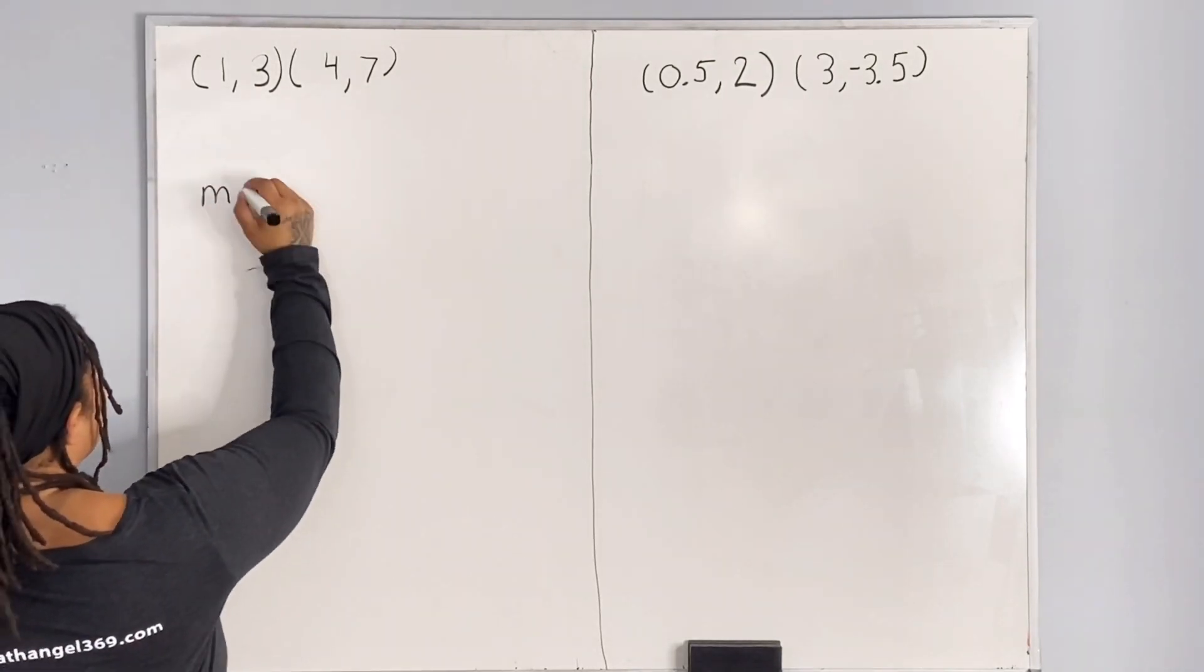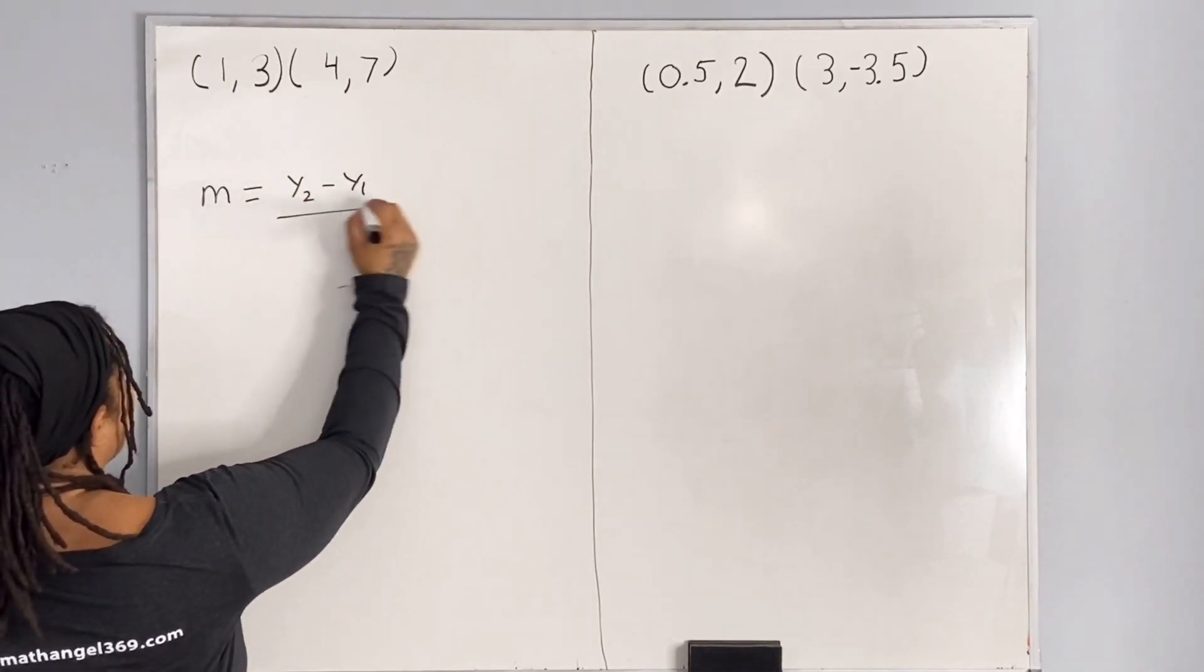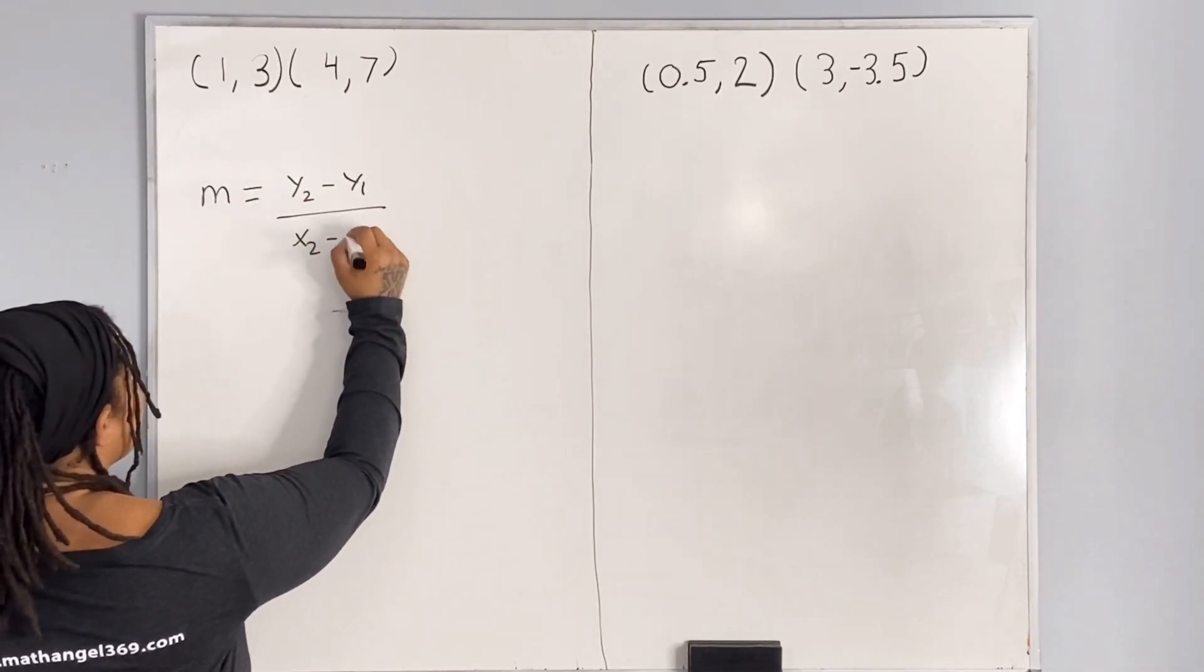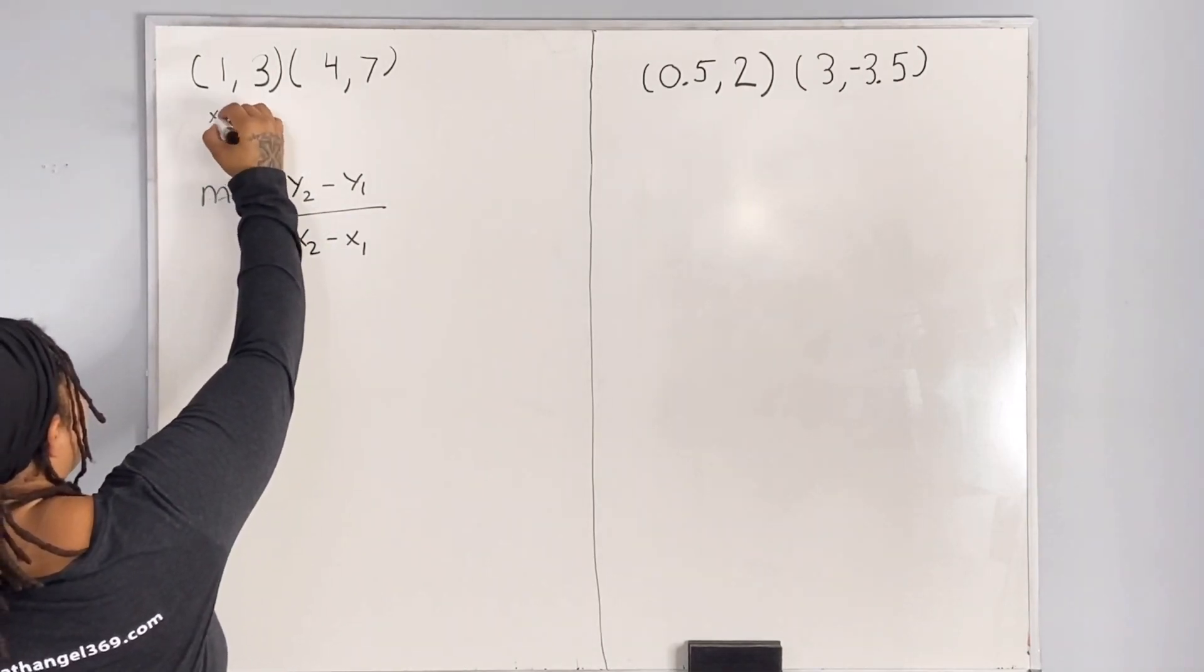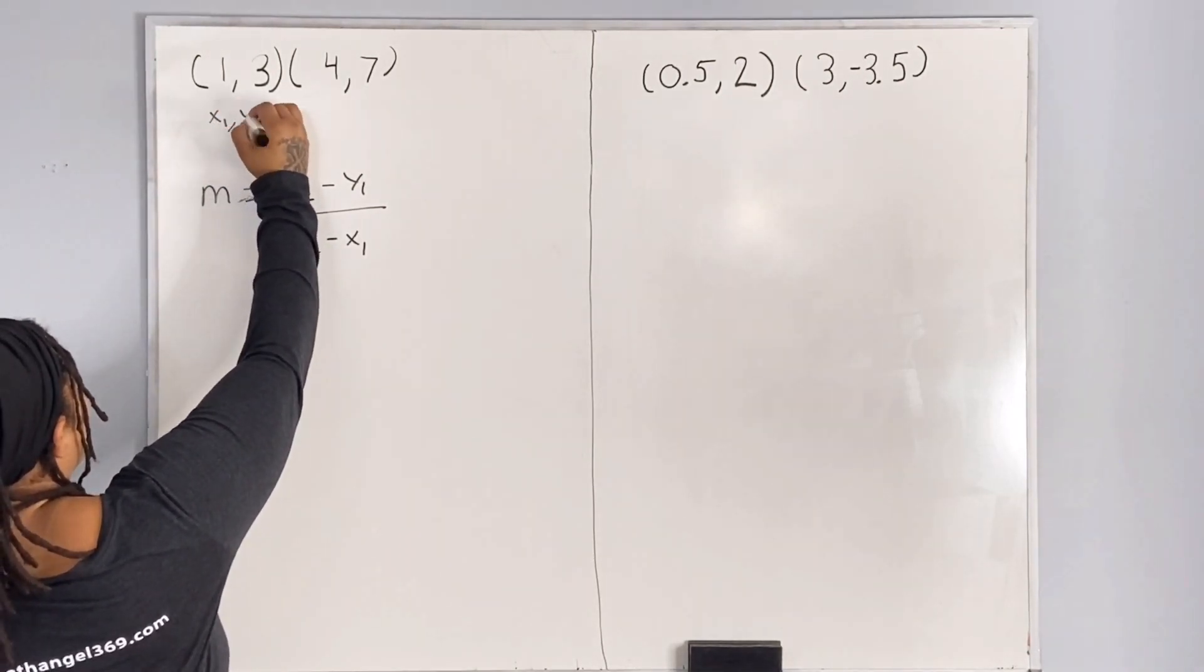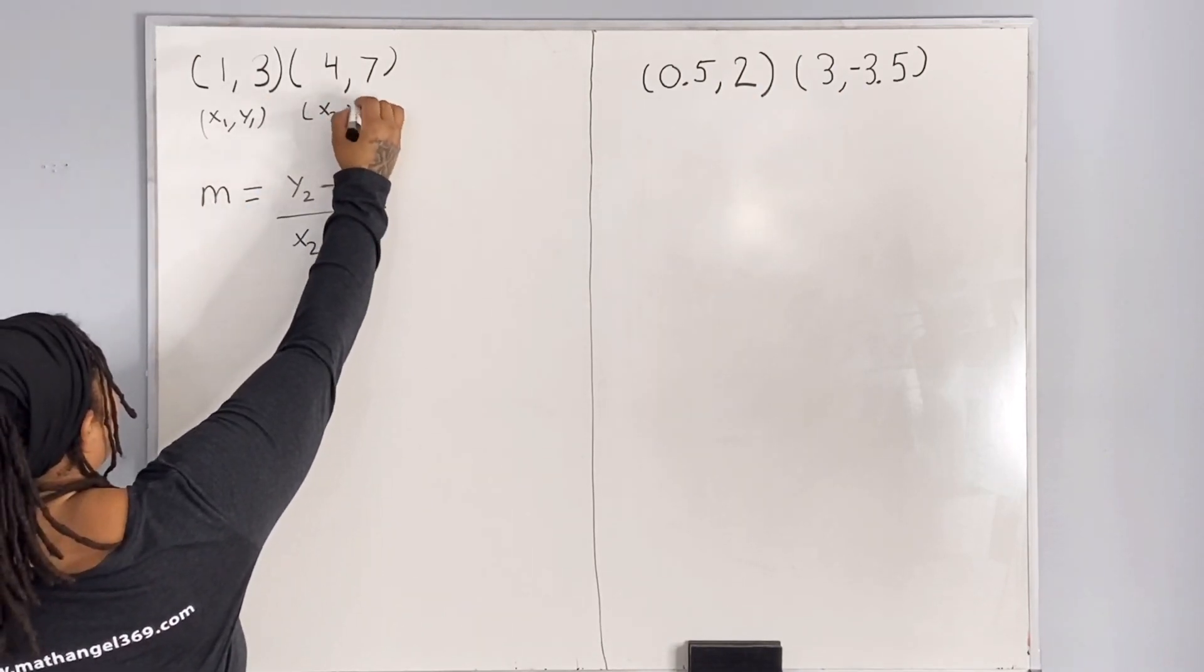m, which is the slope, is equal to y2 minus y1 over x2 minus x1. Let's let the first point be x1, y1, and let's let the second point be x2, y2.